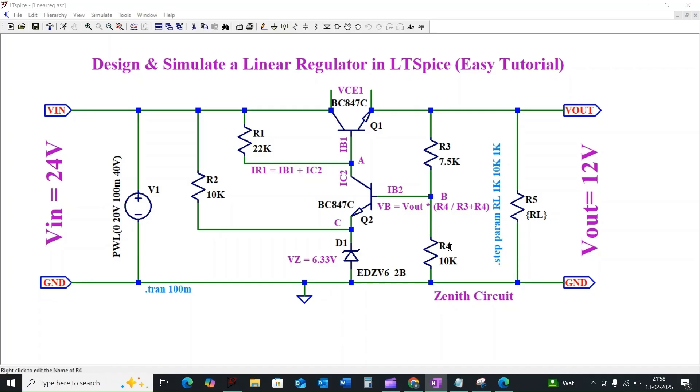So we need to consider very low tolerance and very precise values while selecting resistors R3 and R4. Here voltage at node B will be considered as the base voltage for transistor Q2 and it will be determined by using Thevenin's equation.